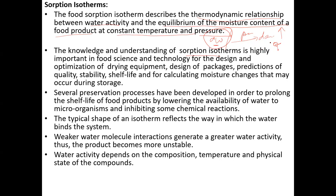At a constant temperature, we decide that this temperature and time is sufficient to get the desired quality of the product — particularly for dehydrated food. For example, suppose you have spinach leaves and want to dehydrate them: initially the moisture content is greater than 90%, so there will be rapid moisture loss.